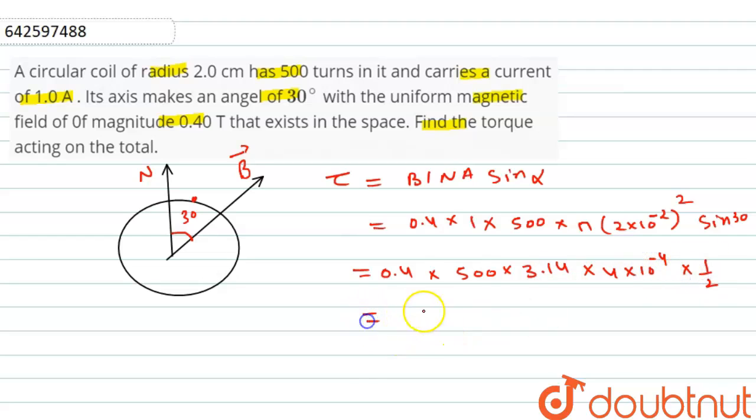After simplification, we will get τ is equal to 0.1256, which will be nearly equal to 0.13 Newton meter. Thank you, students.